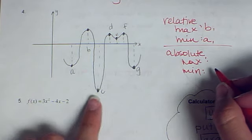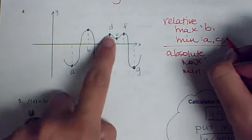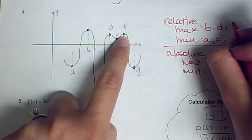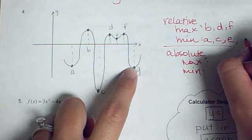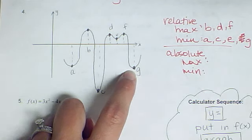So then C would be a minimum. D would be a maximum. E would be a minimum. F would be a maximum. And G would be a minimum.